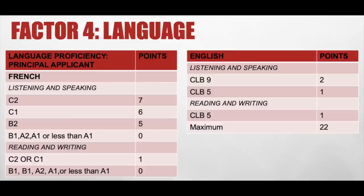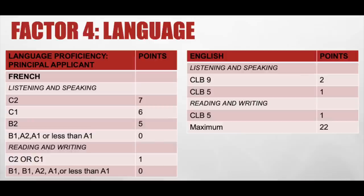Factor four is language. You get the maximum points for French, but French is not mandatory — it just gives you more marks. The maximum score for language is 22. On the basis of English, you can get two points if you have CLB9 in listening and speaking, and one point for CLB5 in reading and writing. For French, if you have C2 you get maximum marks in listening and speaking, and C2 or C1 in reading and writing gives maximum marks.